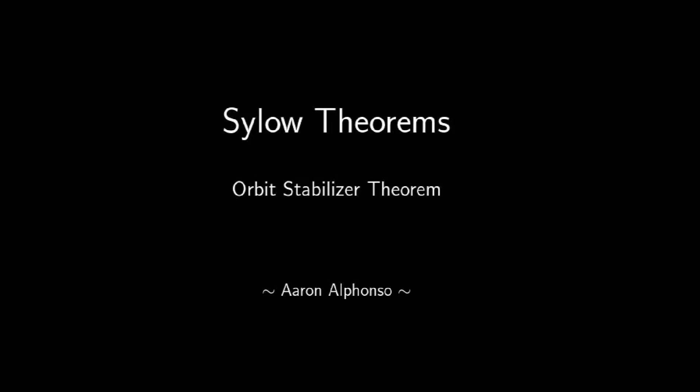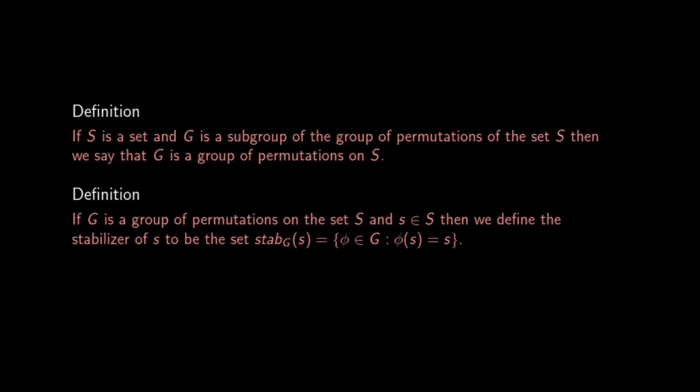In this session we will give a proof of the orbit-stabilizer theorem. A generalization of this theorem can be found in the books 'Abstract Algebra' by David S. Dummit and Richard M. Foote and 'A First Course in Abstract Algebra' by John B. Fraleigh. If S is a set and G is a subgroup of the group of permutations of set S, then we say that G is a group of permutations on S.